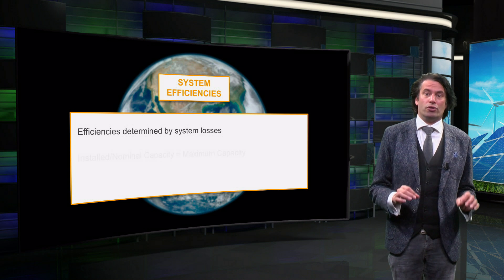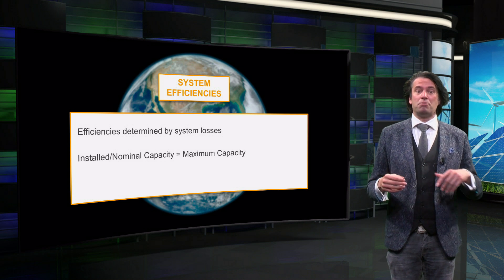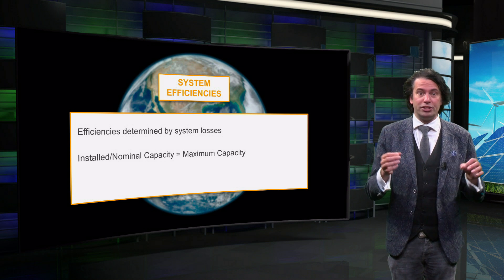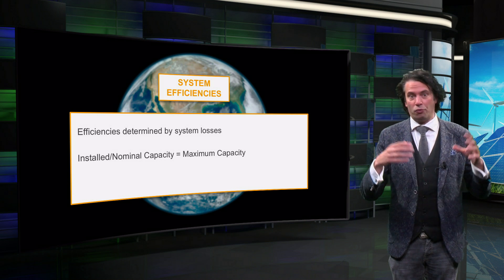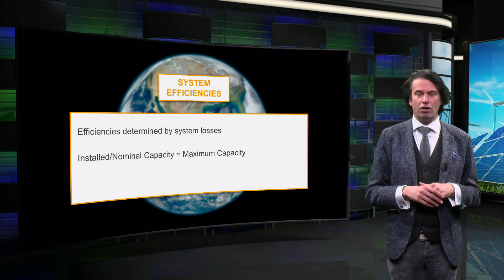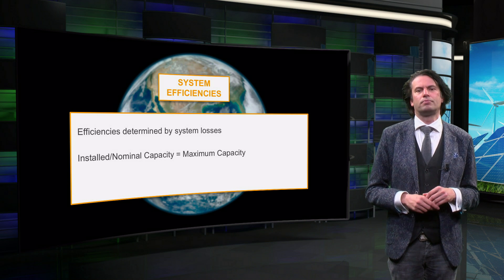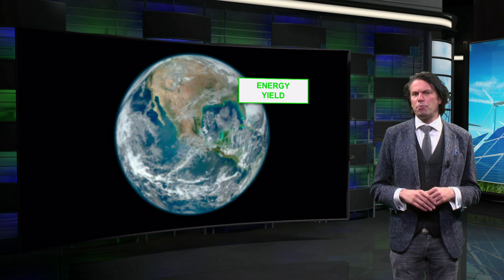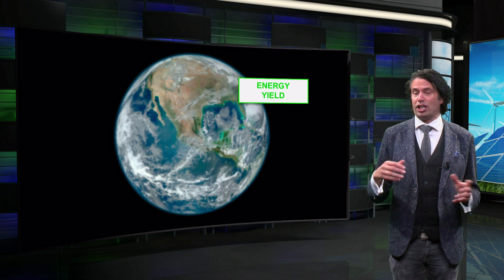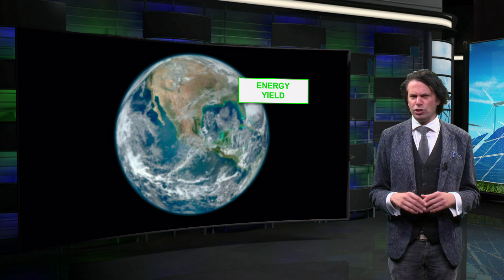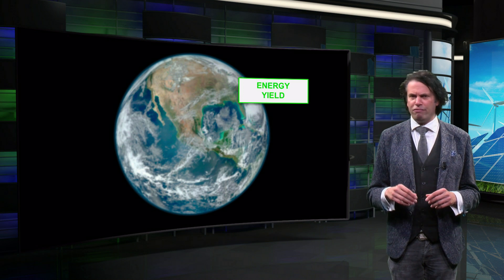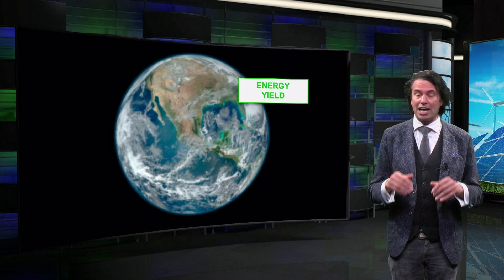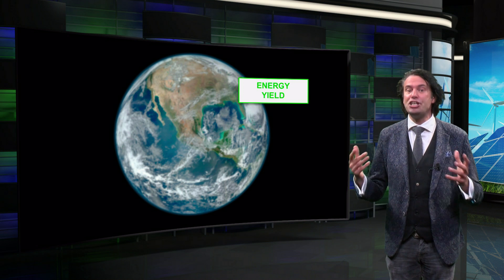Depending on the technology, the maximum output power might be called the installed, nominal, or rated capacity of a system. Throughout a year, the power output of a system changes. This could be caused by various reasons and it influences the yearly energy yield.